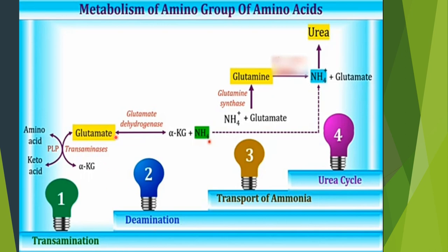Glutamate is the only amino acid that can undergo oxidative deamination in the liver. So the second step is deamination. During deamination, glutamate is broken down into alpha-ketoglutarate and free ammonium ion by the enzyme glutamate dehydrogenase.